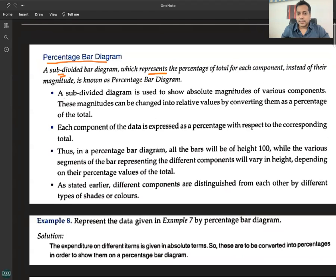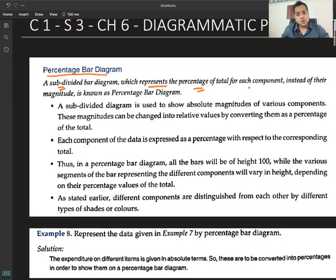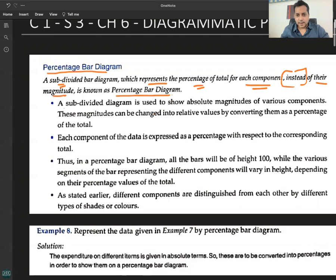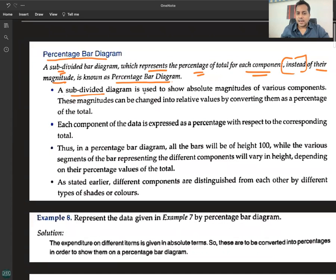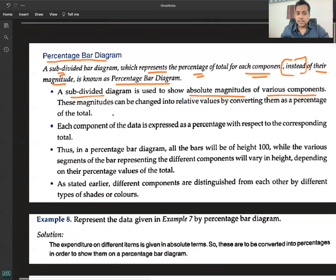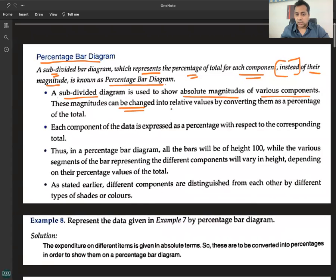A subdivided bar diagram which represents the percentage of total of each component instead of their actual value, it is known as a percentage bar diagram. A subdivided diagram is used to show absolute magnitudes of various components.